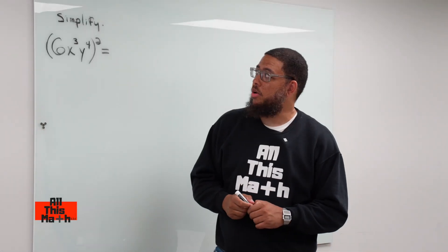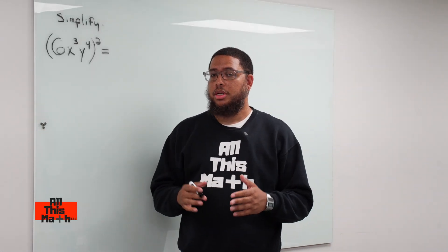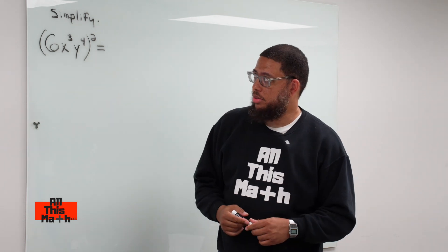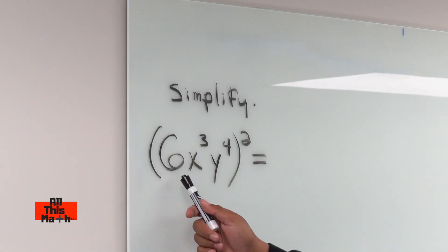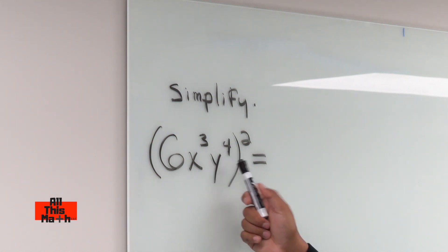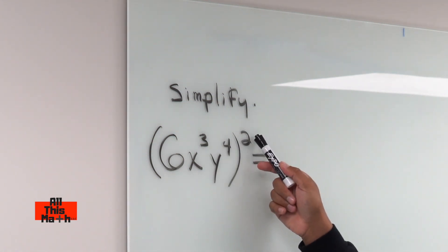Welcome back to All This Math. This is Professor Parker, and for this lesson we're going to talk about another exponent property, the power of a power property. If you look at this problem, you see 6x to the third power y to the fourth power, all raised to the second power.